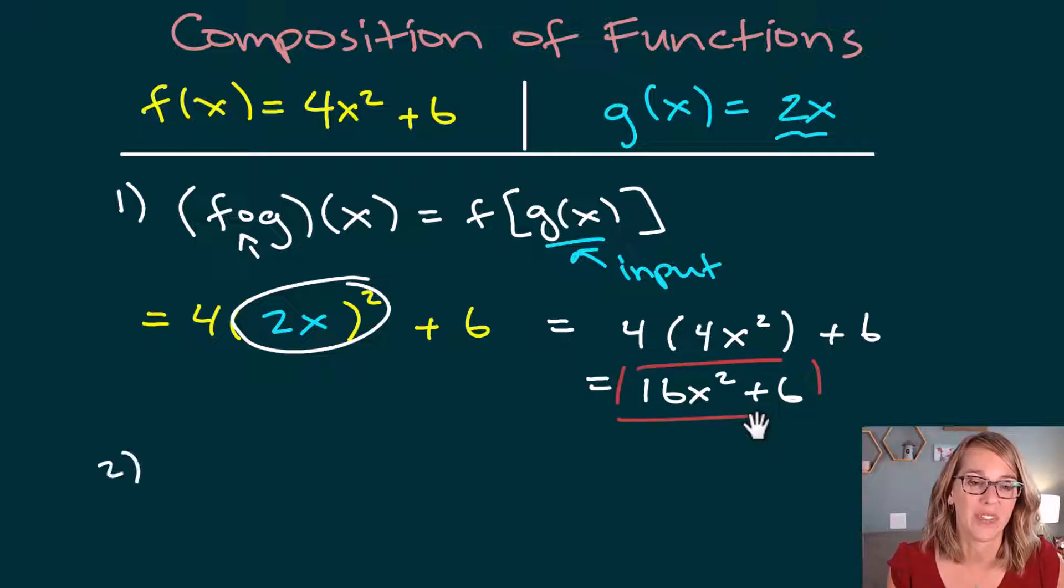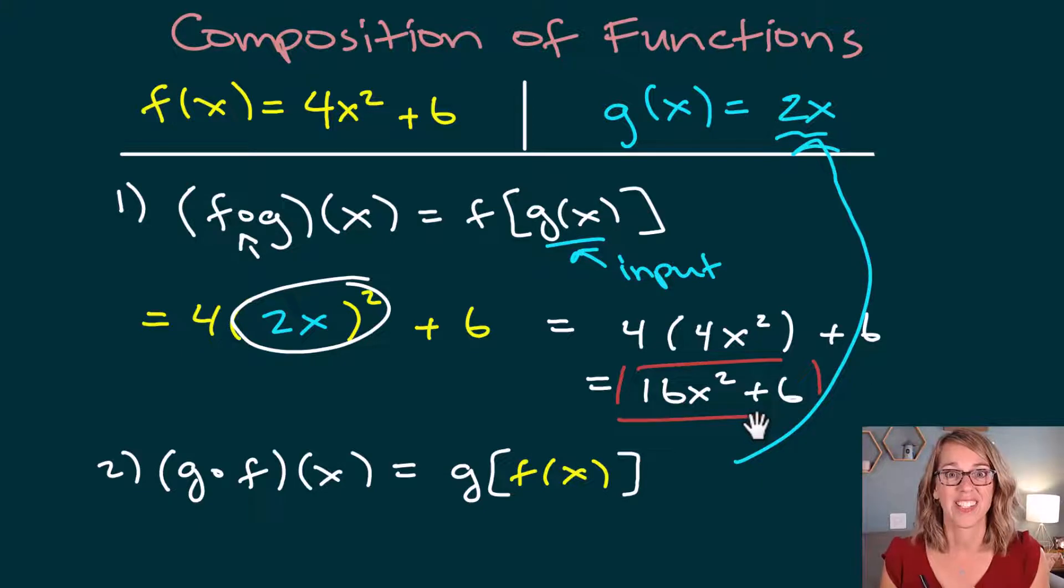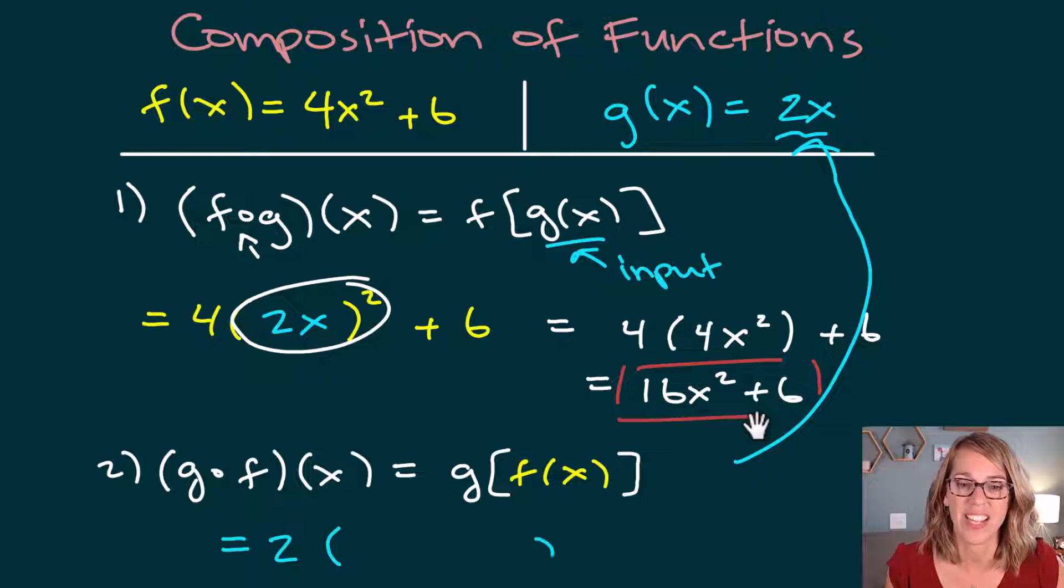So for example number 2, let's do g composed with f of x. So this time I'm going to apply the function g, and f(x) is going to be my input. So I can put f(x) right here. Well, what does g do? g takes whatever we give it, and it's going to multiply it by 2. So g is 2 times whatever that input happens to be, and my input is f(x).